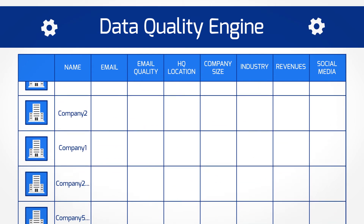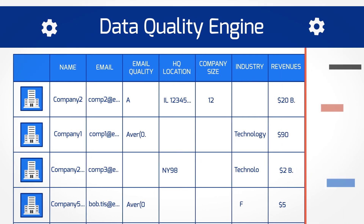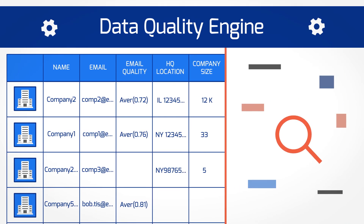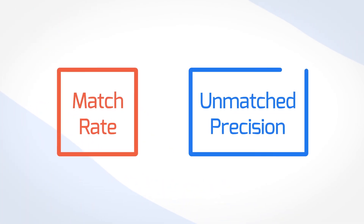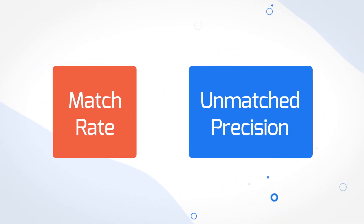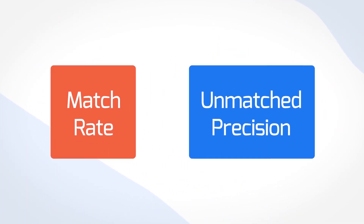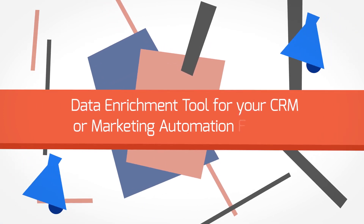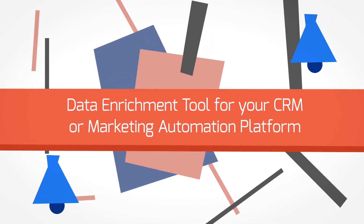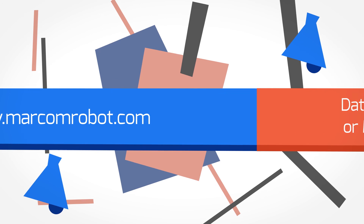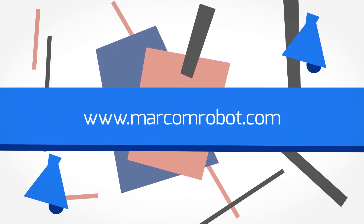We then consolidate all records that we haven't found a match for and continuously re-crawl the information to enrich the remaining records. As a result, you're getting superior match rates and unmatched precision. Learn more about our data enrichment tool for your CRM or marketing automation platform of choice by visiting MarComRobot.com.